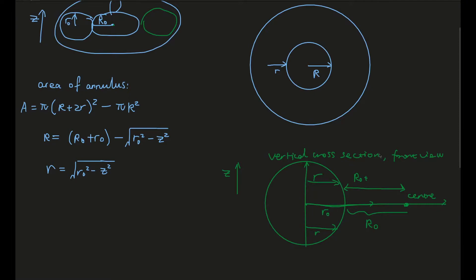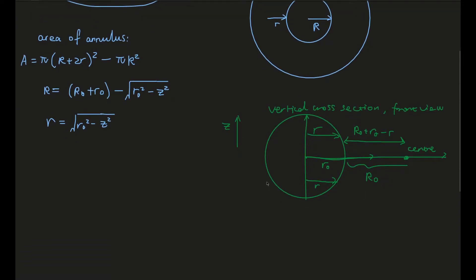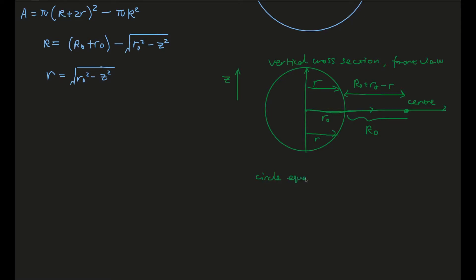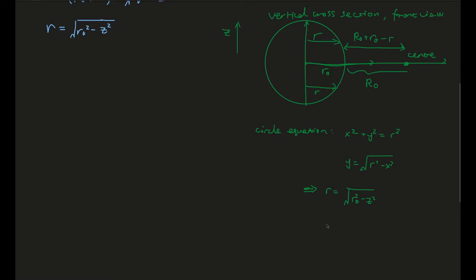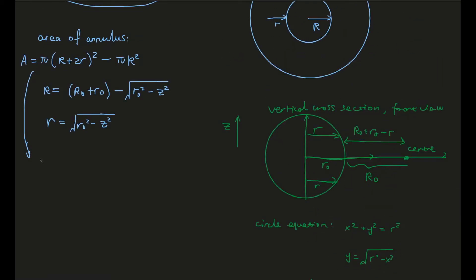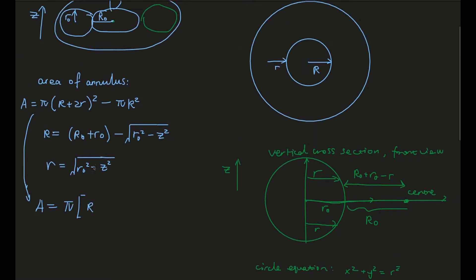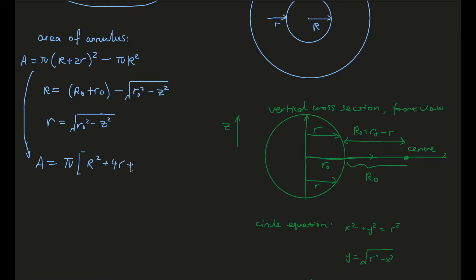We can use circle equations to derive relations between R and z. This allows us to work out the area of the annulus at any given value on the z-axis.